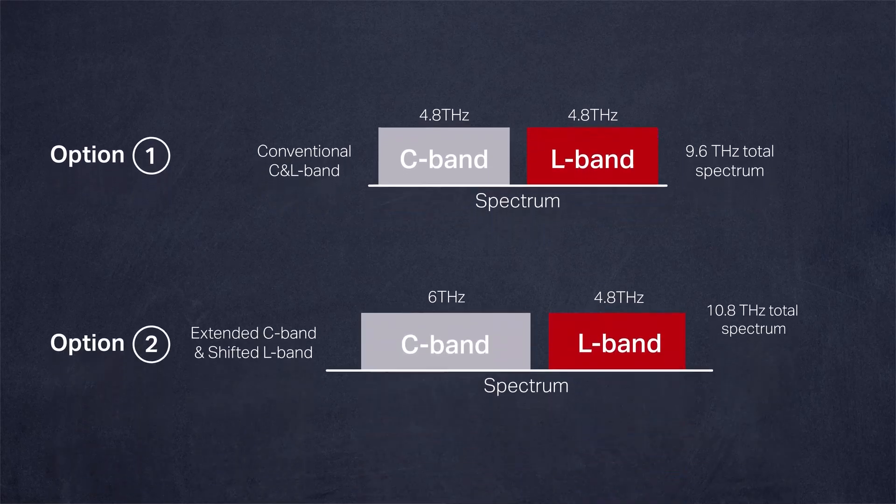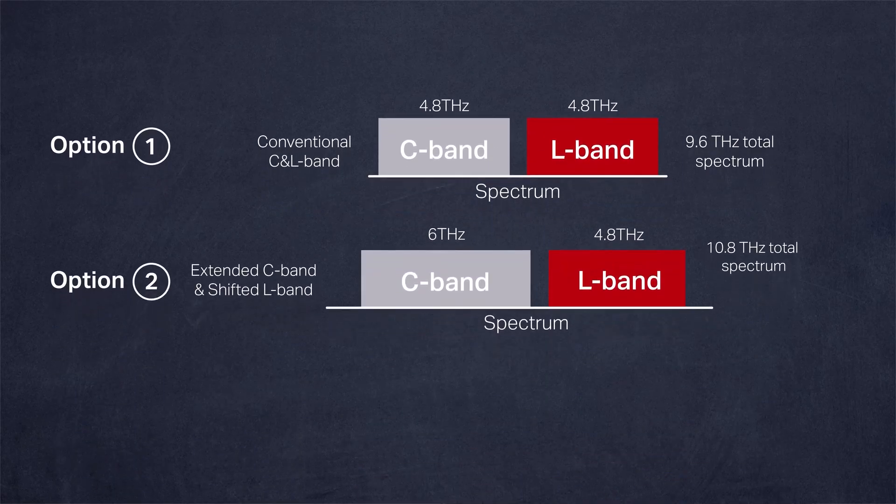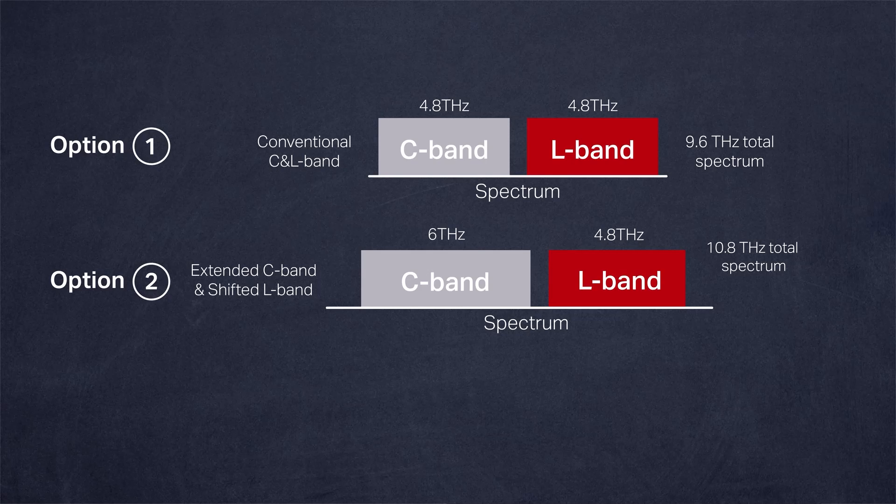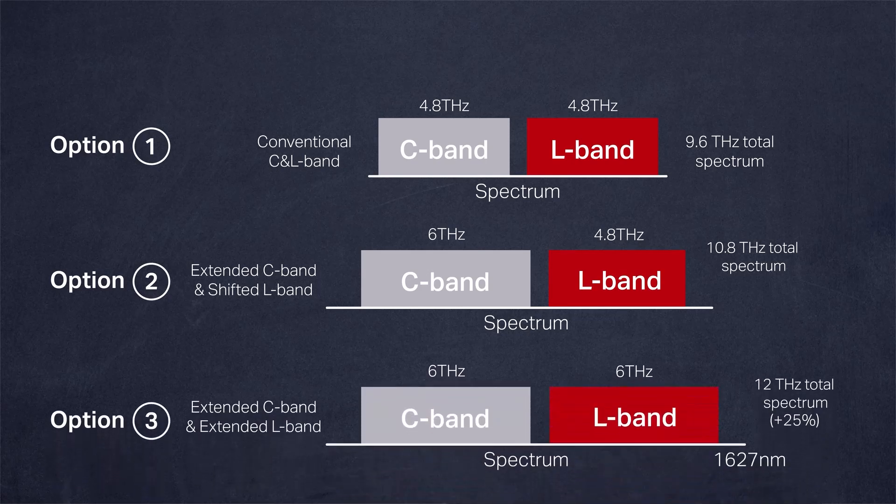The second option widens the C band to 6 THz while shifting the 4.8 THz L band. This results in 10.8 THz of total spectrum or an additional 12.5%. The last option offers 25% more spectrum than the conventional approach by widening both the C band and the L band to 6 THz for 12 THz of total spectrum.